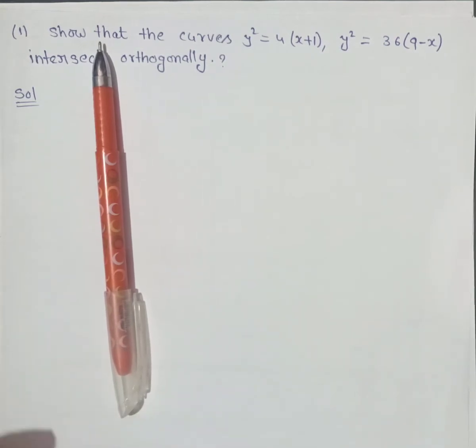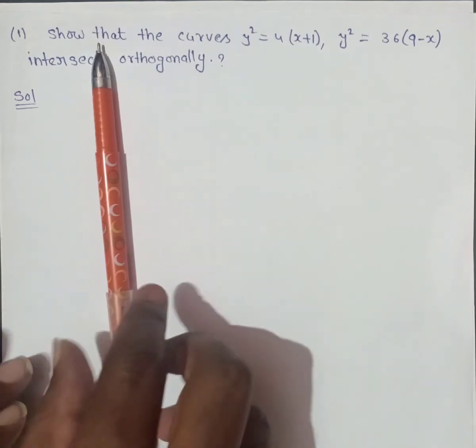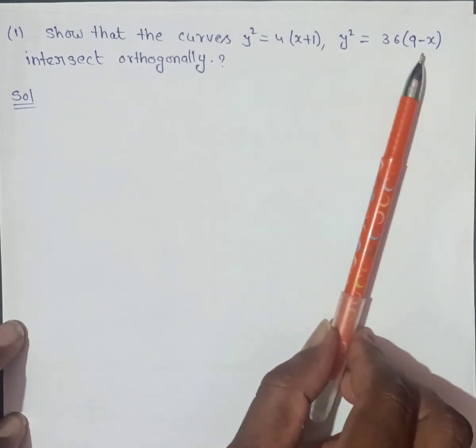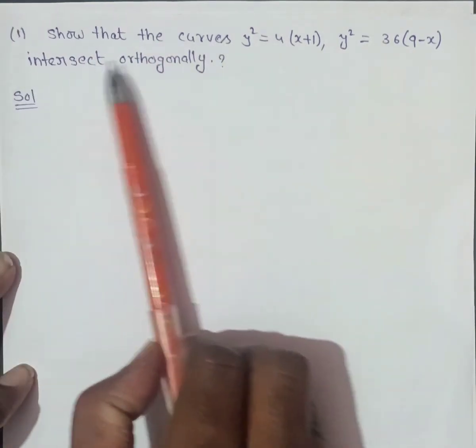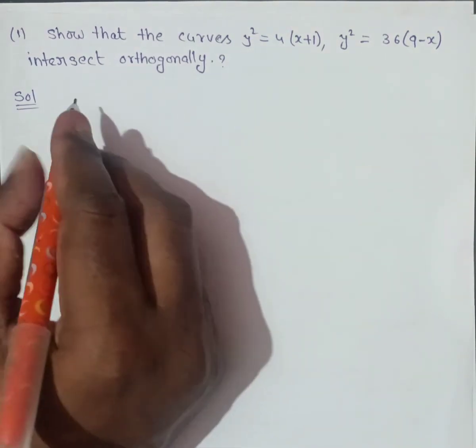It is related to the problem. The other topics are the most important question. The curves Y² is equal to 4 into X plus 1, Y² is equal to 36 into 9 minus X. Intersect orthogonally. So this is a solution.